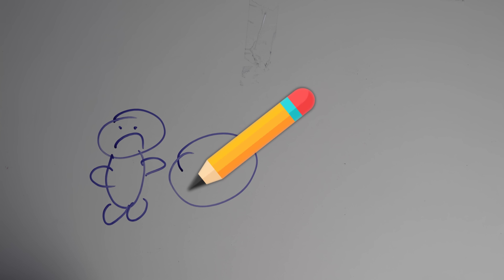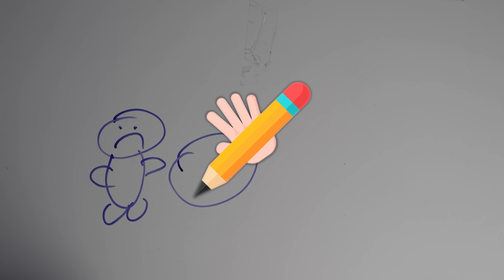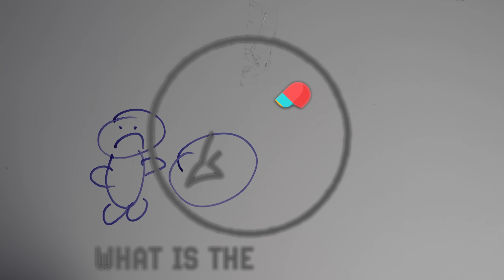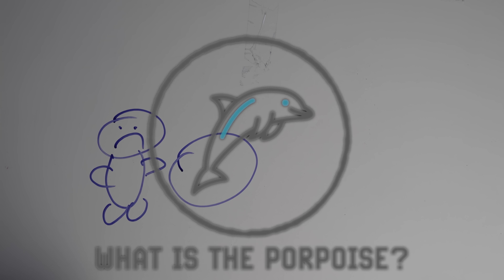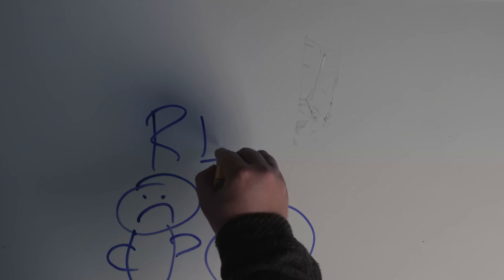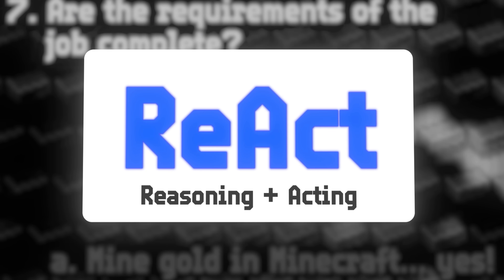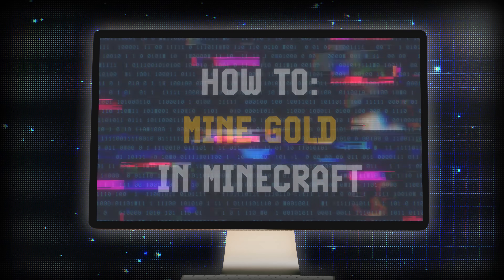What is a pencil? What end of a pencil draws? How do I pick up a pencil? What is a circle? What is my purpose? Why is my life unfulfilling and empty? Maybe I do have some unaddressed childhood trauma. This line of thinking is called ReAct — reasoning and acting — and has been used to help computers play Minecraft.